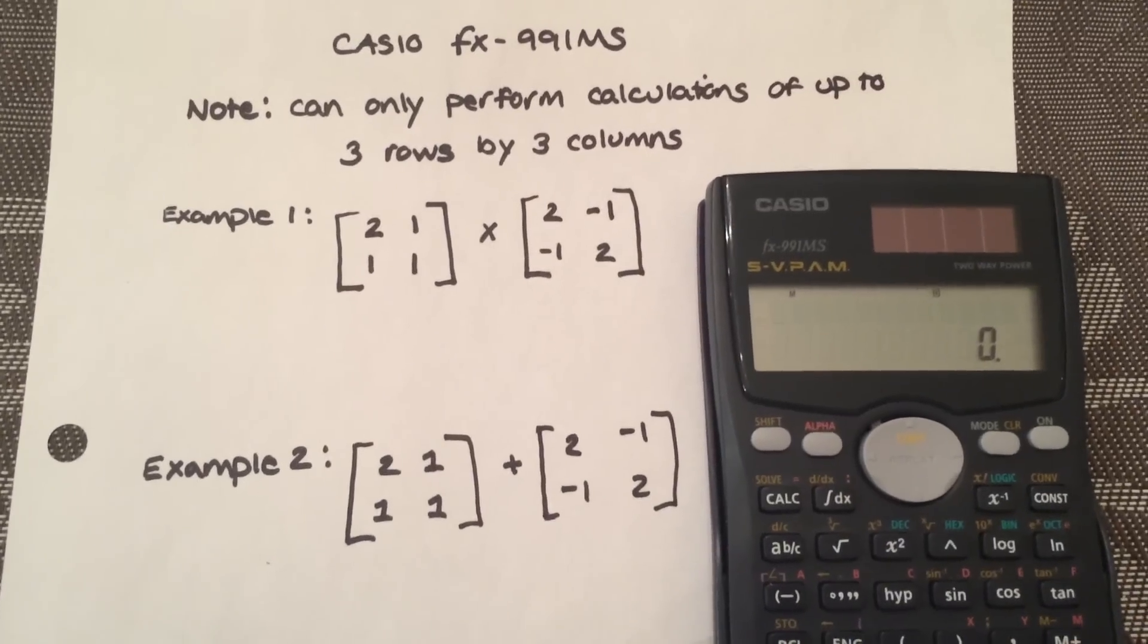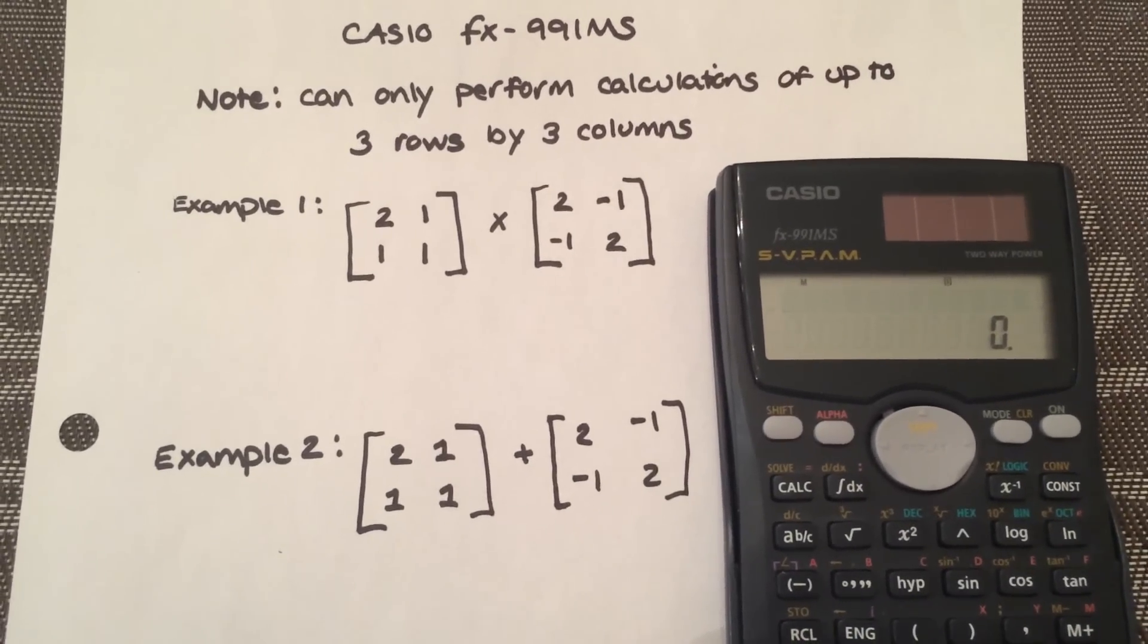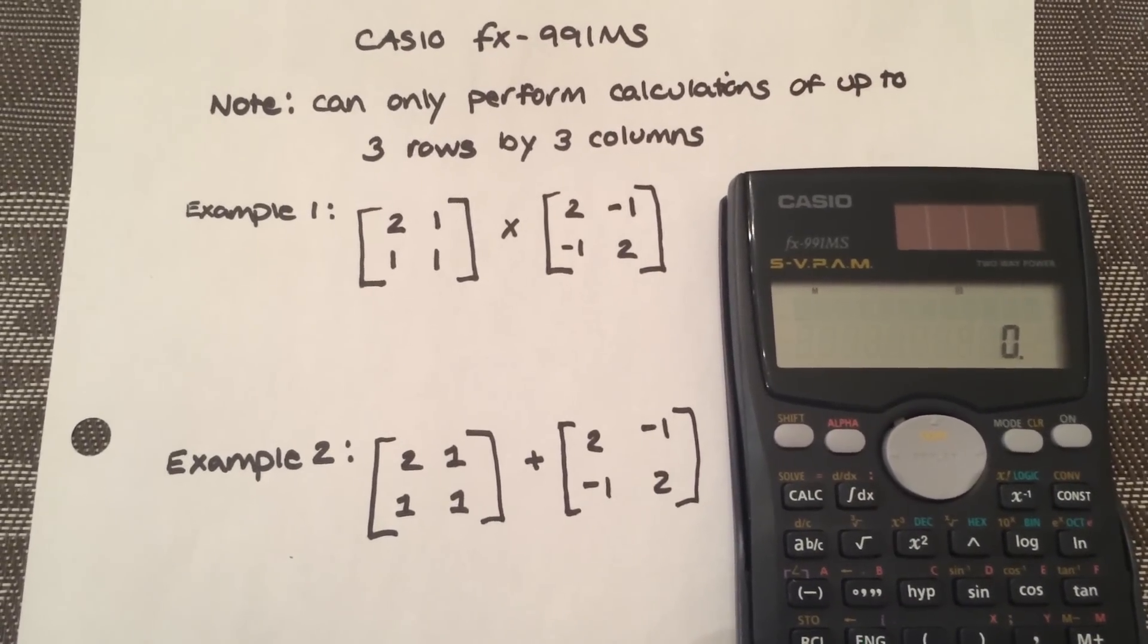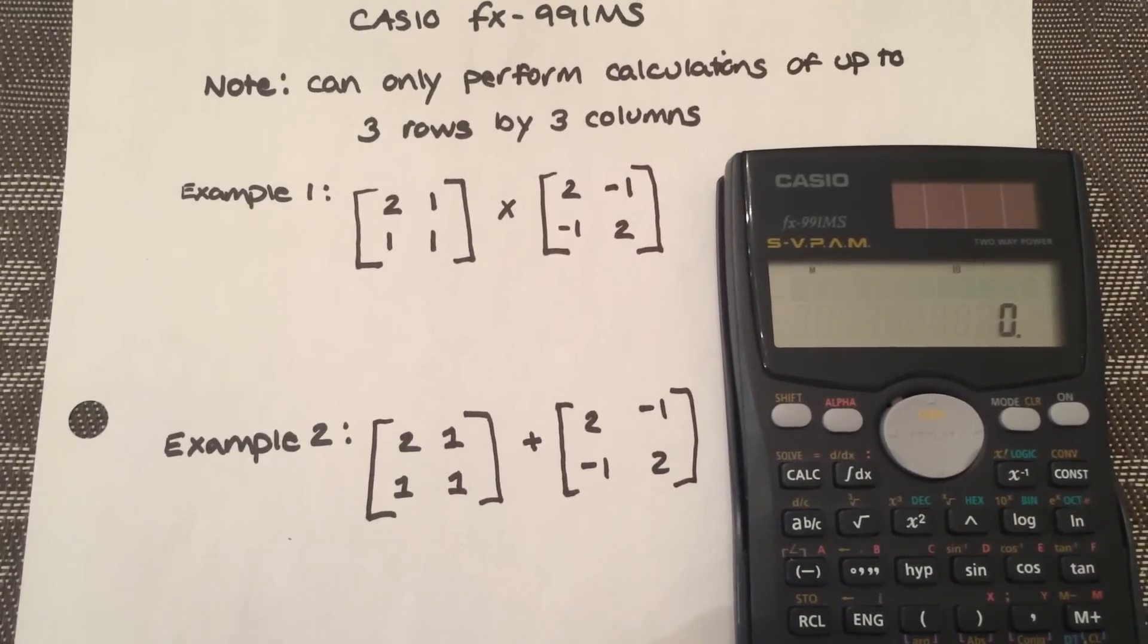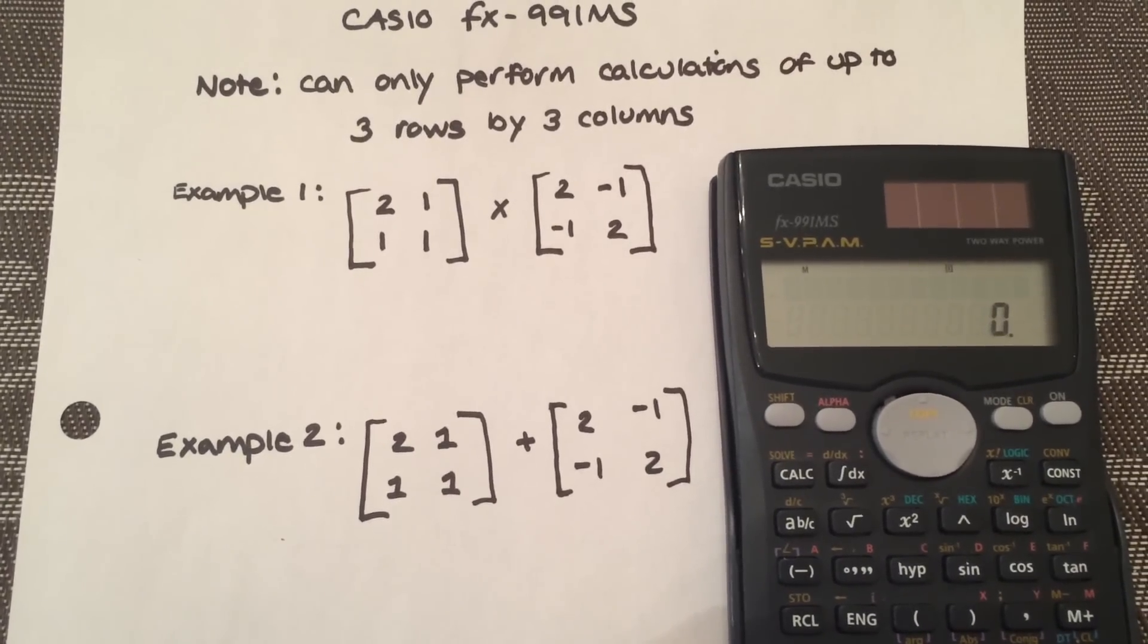I'm going to show you two examples. One is a multiplication with 2 rows and 2 columns in each, and the second one is the addition of the same thing.